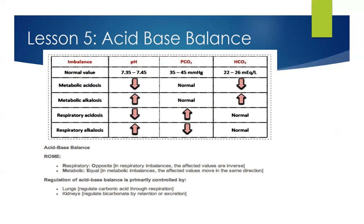The ROME method is a way to memorize: when it's respiratory, it'll be in the opposite direction. Look at your screen — see where it's respiratory acidosis or respiratory alkalosis, and see how it's opposite: when one is low, the other is high. Versus metabolic, which is equal. Look at your metabolic acidosis and metabolic alkalosis — your pH and your HCO3 are equal; they're both either low or both either high. Write down this table and start memorizing your highs and your lows.